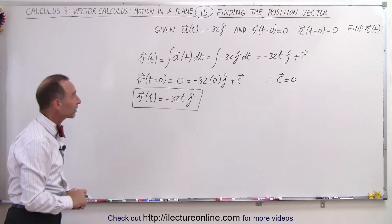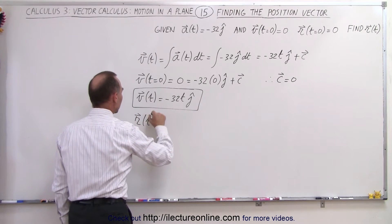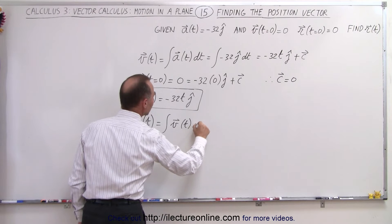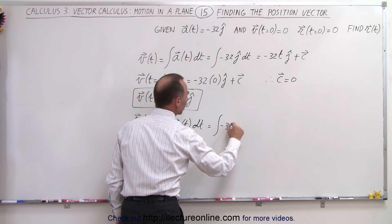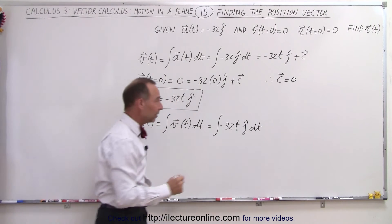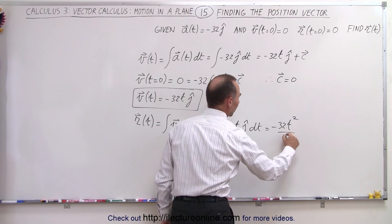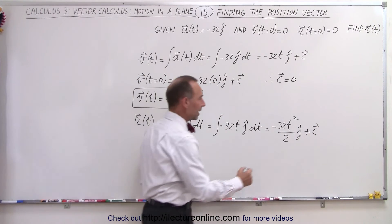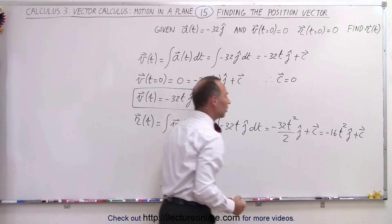We're not looking for the velocity vector — we're looking for the position vector. So now we can say that the position vector is going to be the integral of the velocity vector times dt, which is equal to the integral of minus 32t in the j direction times dt. When we integrate that we get minus 32t squared divided by 2 in the j direction plus a constant of integration, which simplifies to minus 16t squared in the j direction plus a constant of integration.